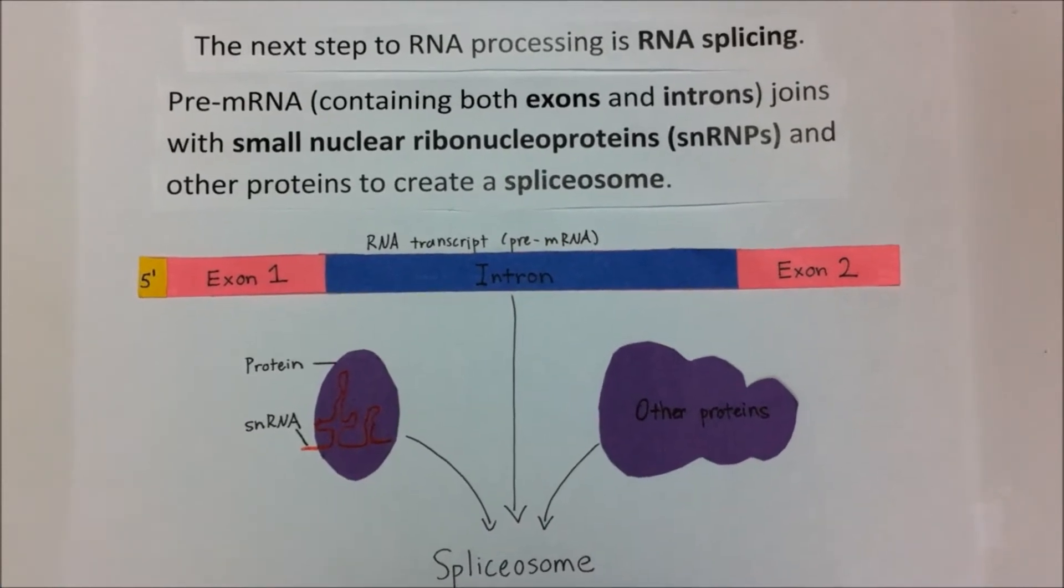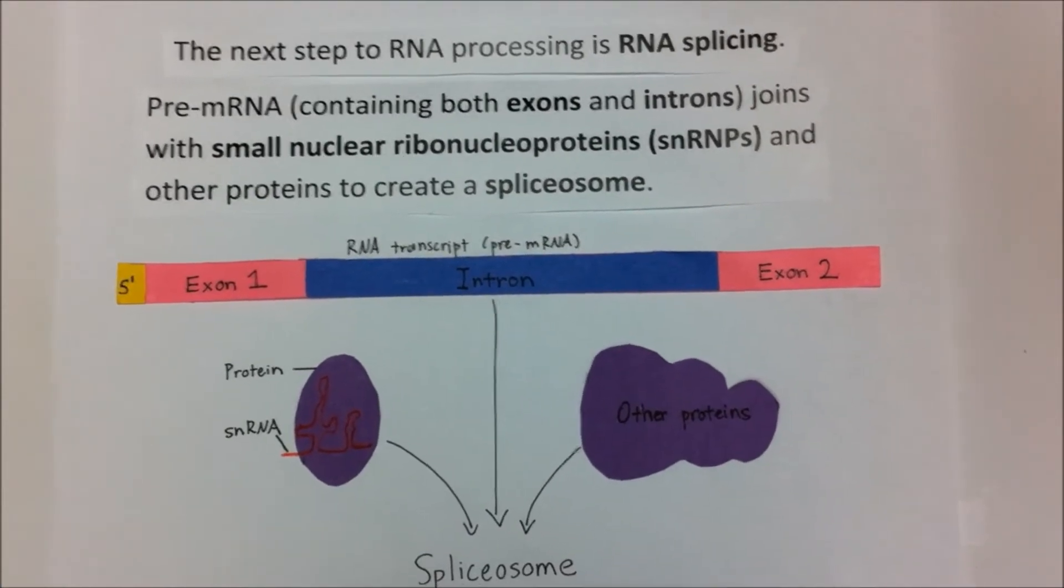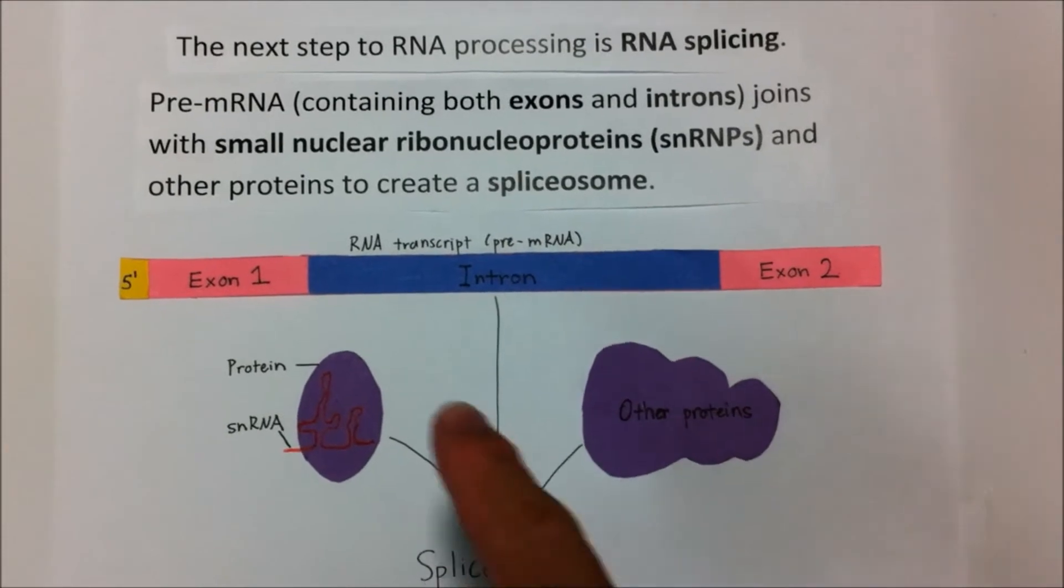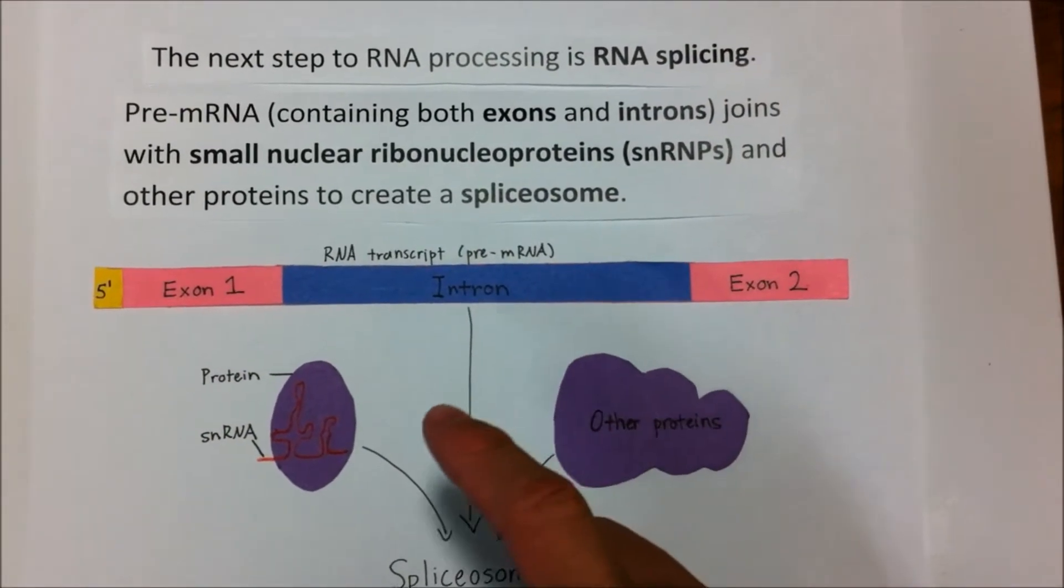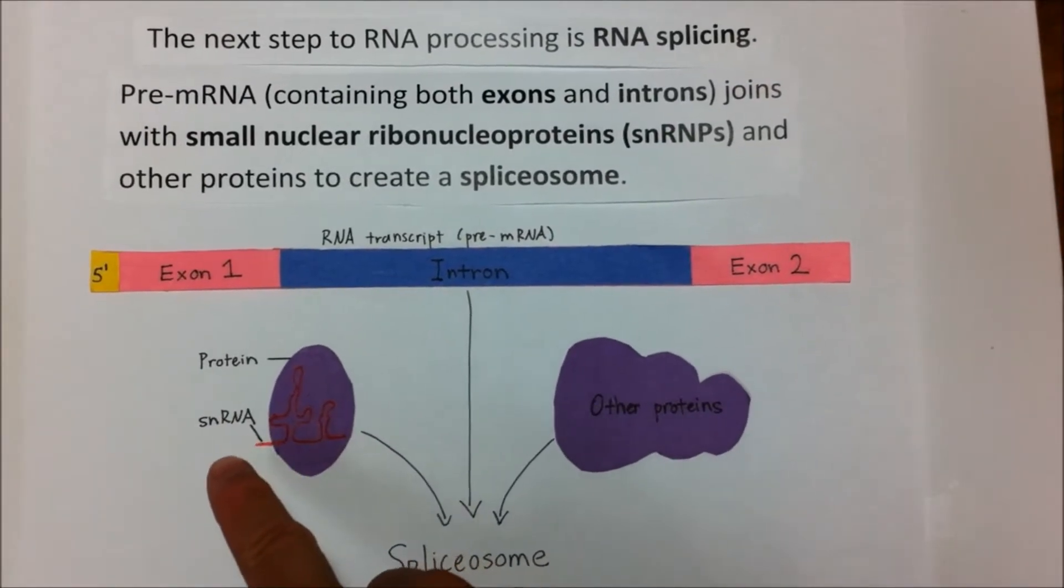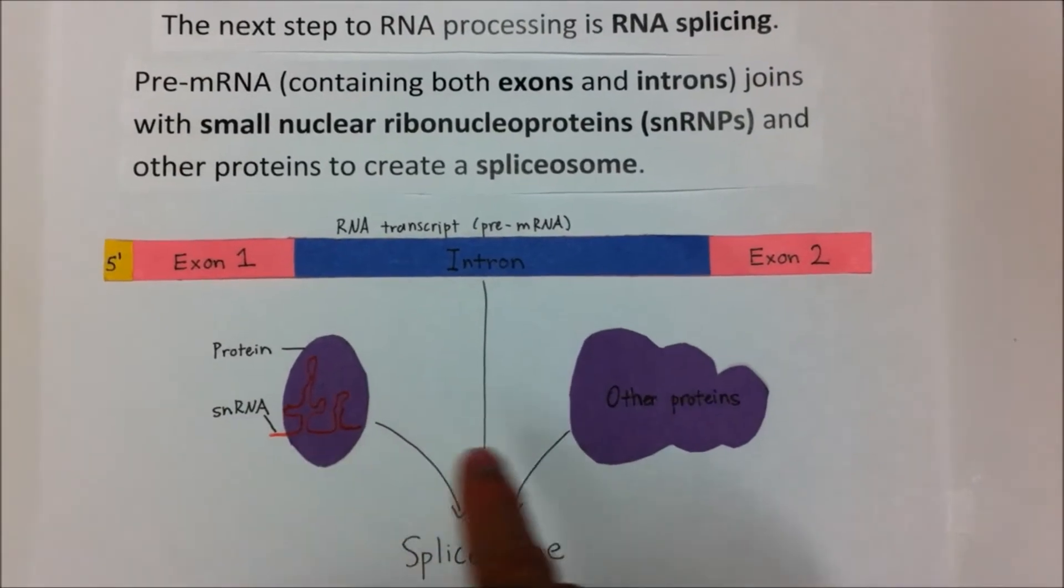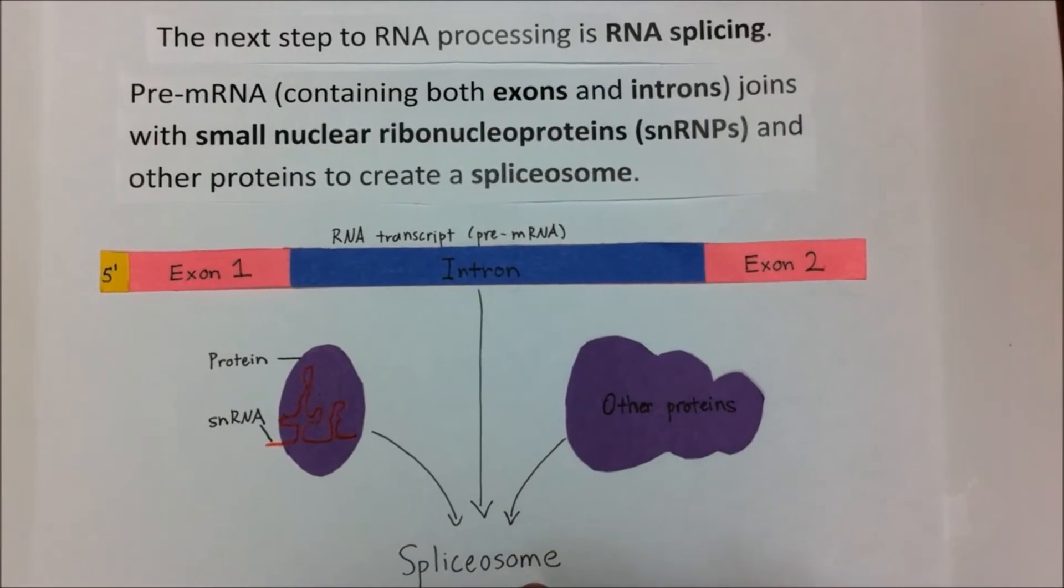The next step to RNA processing is RNA splicing. Pre-mRNA, containing both exons and introns, joins with small nuclear ribonucleoproteins, or snRNPs, and other proteins to create a spliceosome.